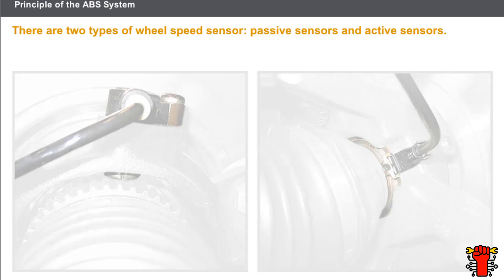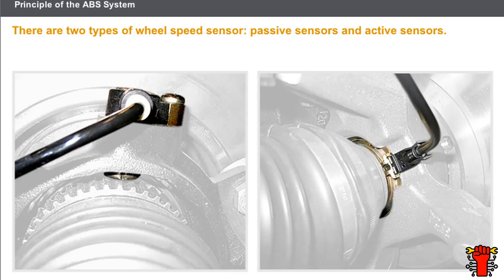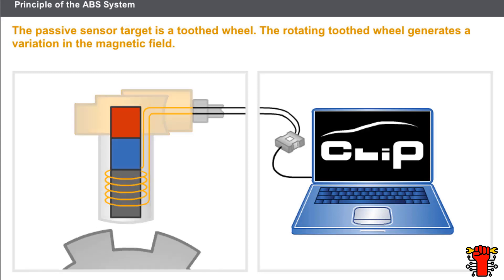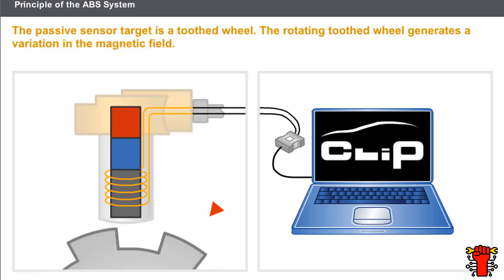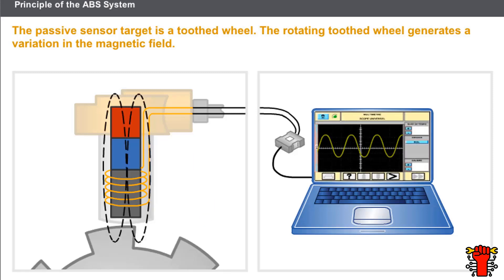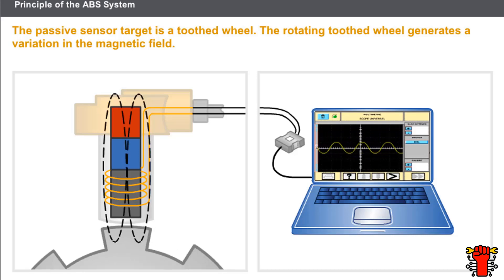There are two types of wheel speed sensor: passive sensors and active sensors. The passive sensor, also known as the inductive sensor, comprises a permanent magnet and a coil. The sensor is fitted opposite a target. The target is a toothed wheel, which may be known as a pulse wheel. The rotating toothed wheel generates a variation in the magnetic field and induces a sinusoidal signal. The signal quality depends on the speed of rotation of the wheels.